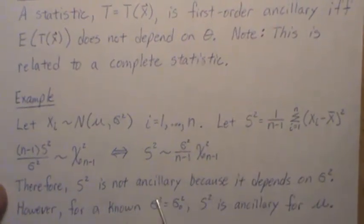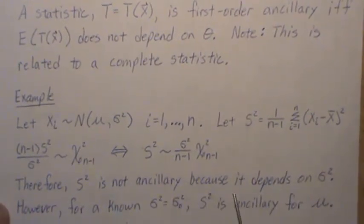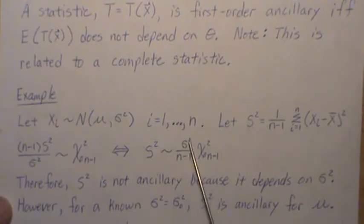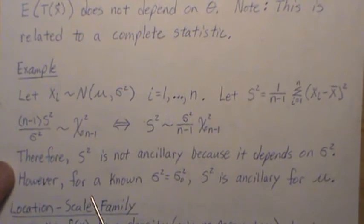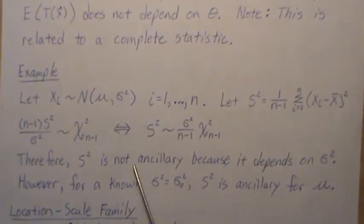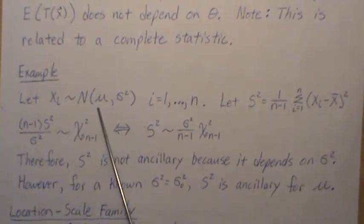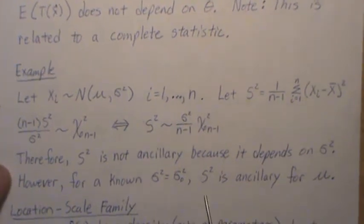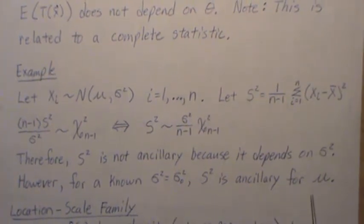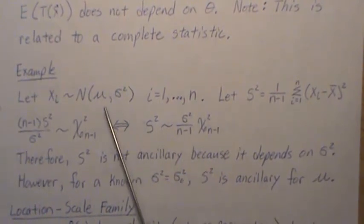But note, therefore, S squared is not ancillary because it depends upon sigma squared. However, for a known sigma squared, so if Xi is mean mu and known variance, then S squared is ancillary for mu because it does not depend upon mu.